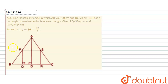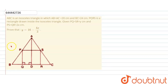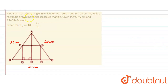So AB equals AC, that is 20 cm, and this is given as 20 cm. BC equals 24, so this whole length is 24 cm. PQ equals SR equals Y, and PS equals QR equals 2X — these are the measures given to us. We need to prove that Y equals 16 minus 4X by 3.